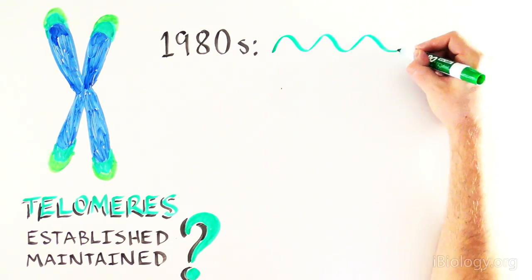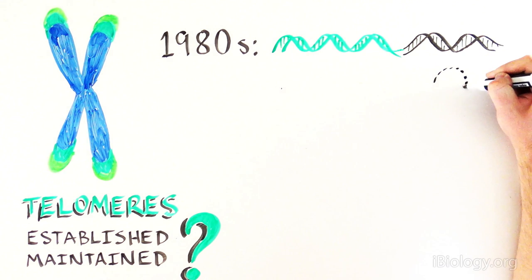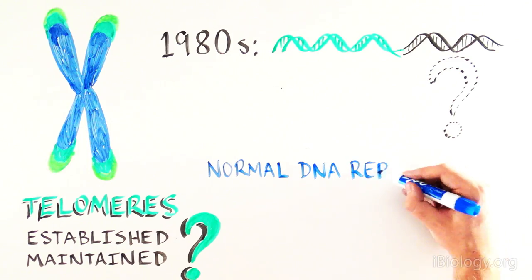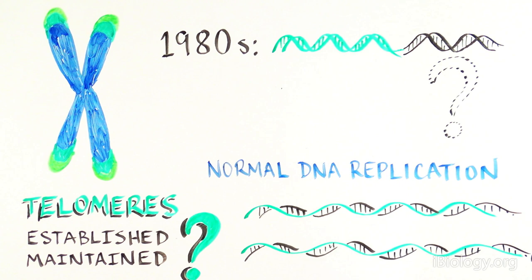This question puzzled scientists in the 1980s because nothing we knew about biology could explain how DNA could get added onto the end of another piece of DNA. Normal DNA replication by DNA polymerase requires a DNA template, so it can't add anything to the ends of chromosomes where there is no template. In the 1980s, this was an important missing piece of biology that was quite a mystery.